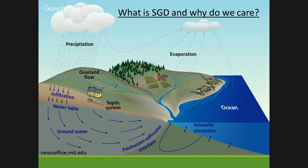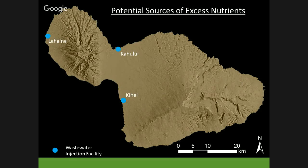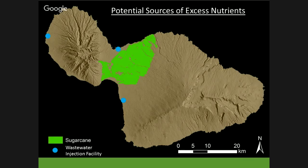Here we are on Maui. The first and probably most well-known issue is the wastewater injection plants — Lahaina, Kahului, and Kihei — where treated wastewater is injected into the ground near the coastline. There's been a lot of research on these areas. Unlike Oahu, there's still a lot unknown about the overall extent of groundwater discharging around the island of Maui. Maui is known for sugarcane; former sugarcane areas on West Maui can still contribute nutrients through legacy effects, as sugarcane ended in 1999.